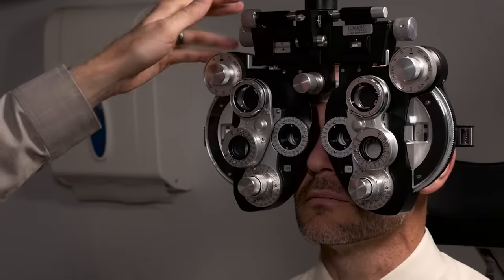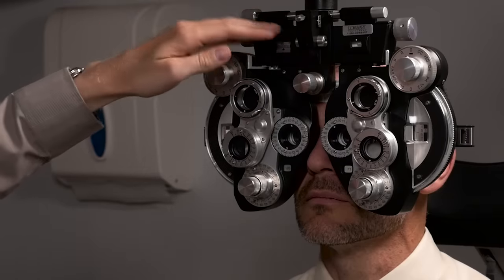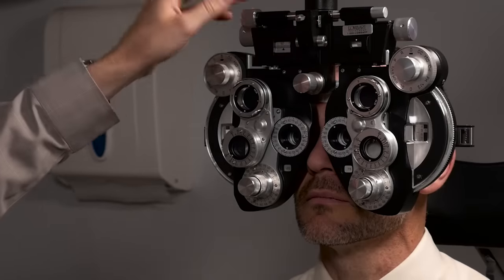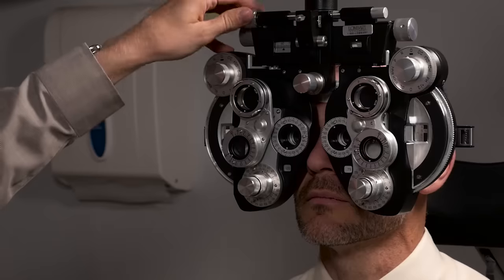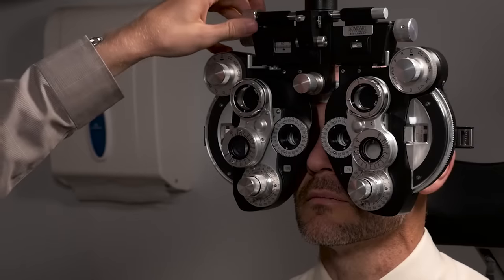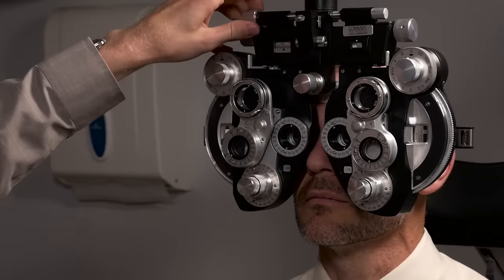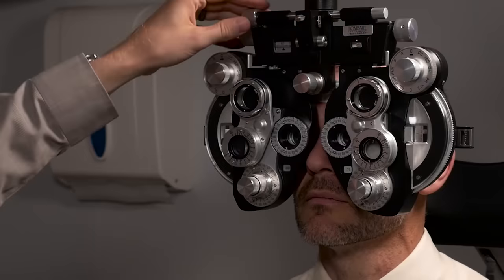Another important thing to factor in is to make sure that the phoropter is level. To do so you use this leveling window here and to adjust it you turn this dial above and you try to get it so it's just level right there so the bubble and the dot match up.